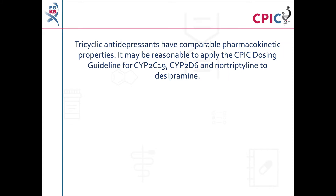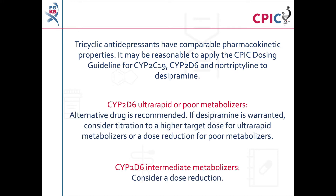Because tricyclic antidepressants have comparable pharmacokinetic properties, it may be reasonable to apply the CPIC dosing guideline for CYP2D6 and nortriptyline to desipramine. The guideline recommends an alternative drug for patients who are CYP2D6 ultra-rapid or poor metabolizers. If desipramine is warranted, a dose reduction can be considered for patients who are CYP2D6 poor metabolizers. A dose reduction can also be considered for patients who are CYP2D6 intermediate metabolizers.